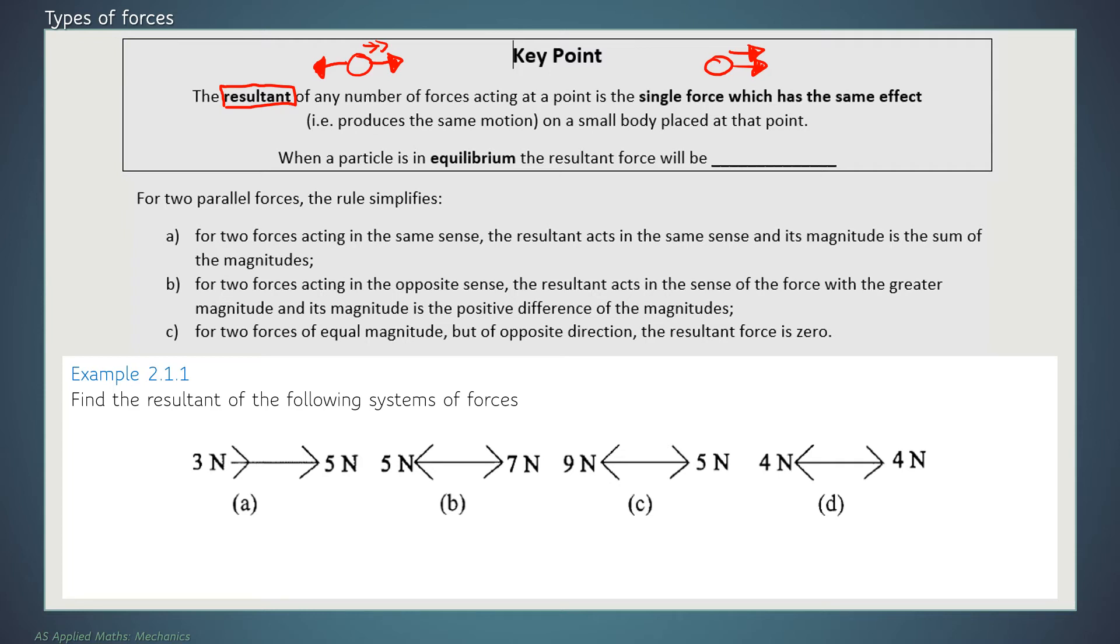When a particle is in equilibrium, another key word here, the resultant force will be zero. So these are just some key facts to learn. Equilibrium means that either the particle is not moving or that we have a constant velocity. In both cases, the acceleration will be zero. The key point here is when we're in equilibrium, that resultant force is equal to zero.